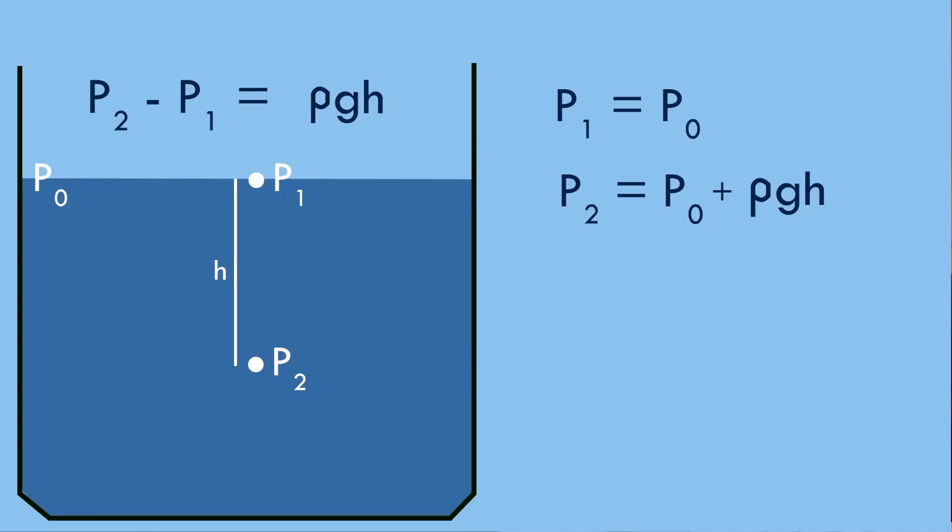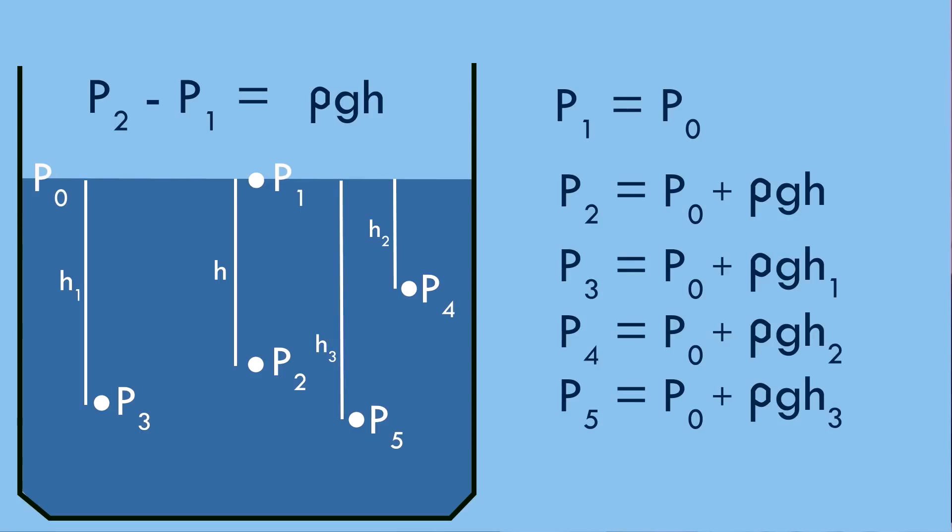If you consider a bunch of points at random heights, then the pressures at each of those points would be equal to p0 plus ρg times the corresponding depth from the surface. So that's pretty logical.